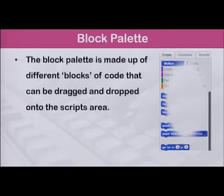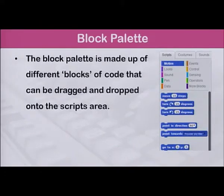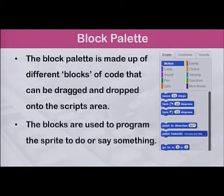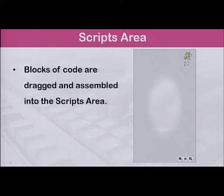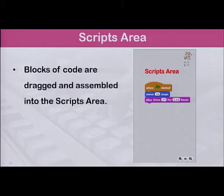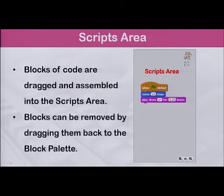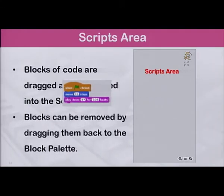A very important part of the Scratch interface is the block palette. The block palette is made up of different blocks of code that can be dragged and dropped onto the scripts area. The blocks are used to program the sprite to do or say something. The scripts area is where the blocks of code are dragged and assembled. Blocks can be removed from a script by dragging them back to the block palette.